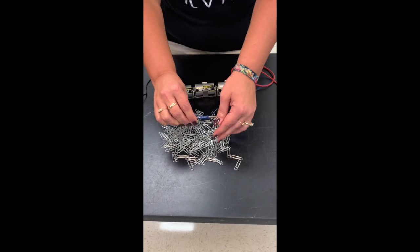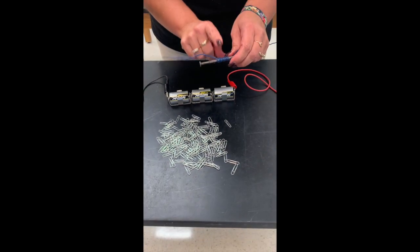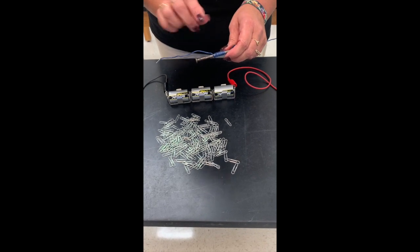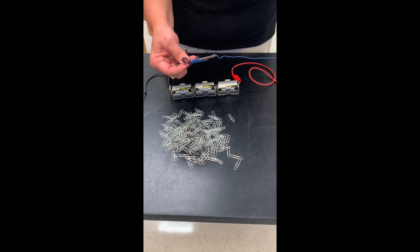And so if you increase the amount of voltage you increase current and you pick up more paper clips with your electromagnet which is showing that you have a stronger magnetic field.